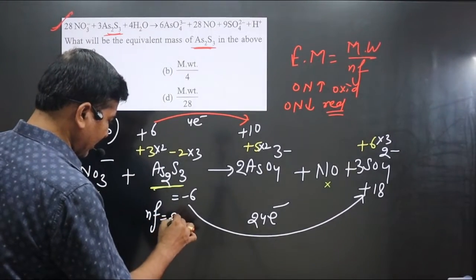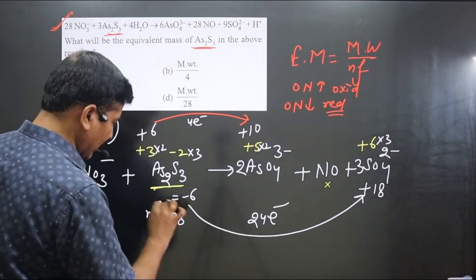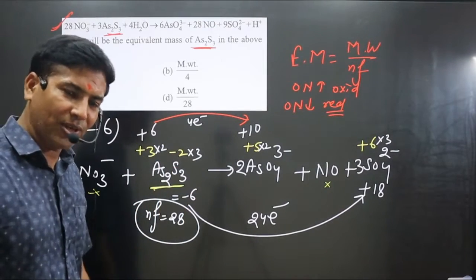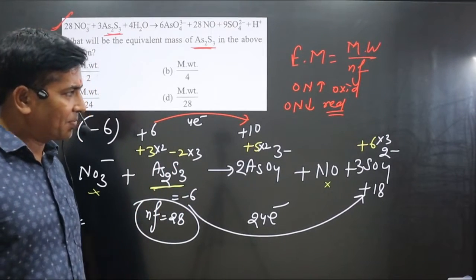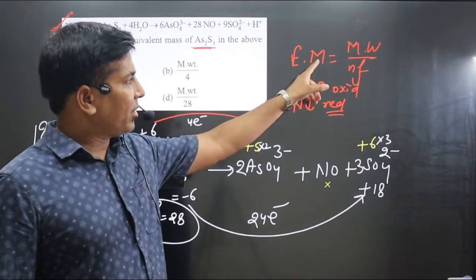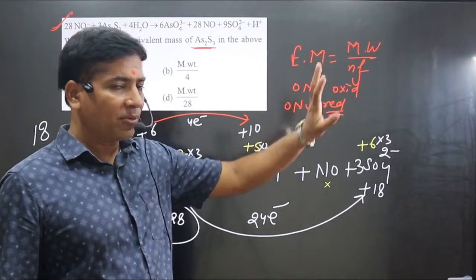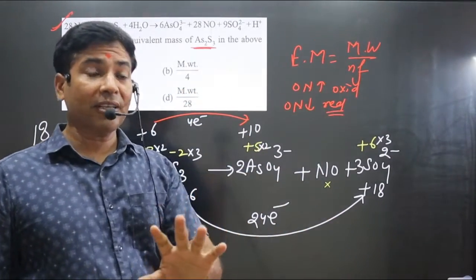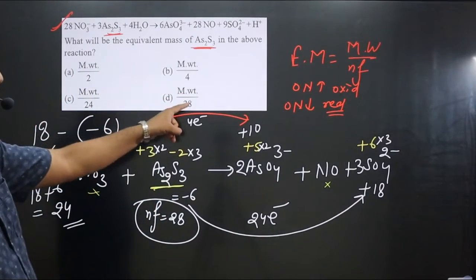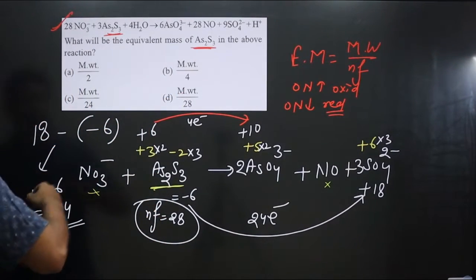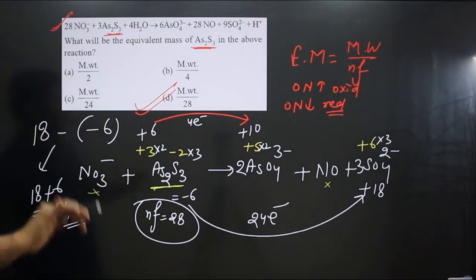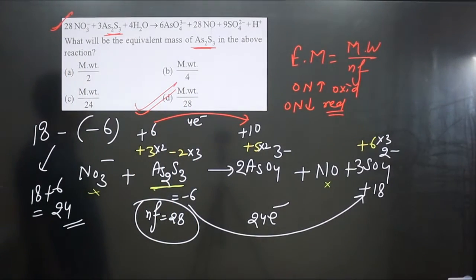The n-factor value we are getting is 28. Now apply the formula: equivalent mass = molecular weight divided by n-factor = molecular weight divided by 28. Option D is correct.